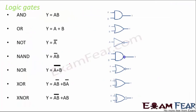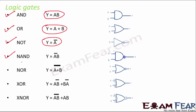In logic gates, there are three basic fundamental gates: AND, OR, and NOT. In an AND gate, if A and B are inputs, the output is Y = A·B. In an OR gate, Y = A + B. In a NOT gate, Y = Ā. A NAND gate combines NOT and AND, giving Y = (A·B)̄. A NOR gate combines NOT and OR, giving Y = (A+B)̄.